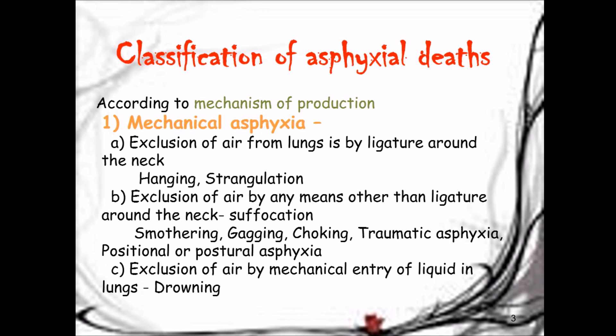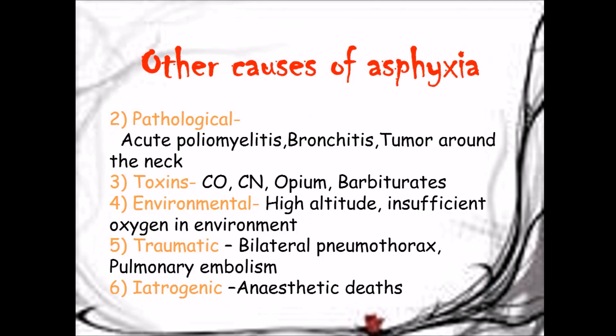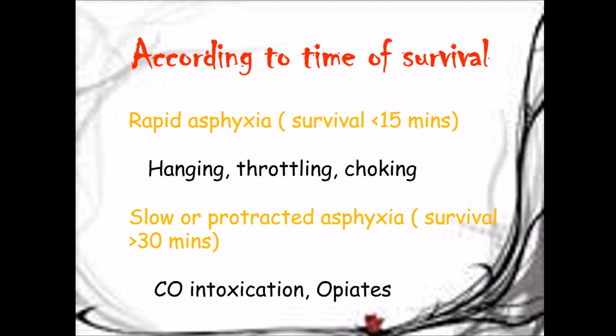Other forms include traumatic asphyxia or postural/positional asphyxia. Third is exclusion of air by mechanical entry of liquid into the lungs, as in drowning. Pathological asphyxia is seen in acute poliomyelitis, bronchitis, and tumors around the neck, as well as various toxins like carbon monoxide, cyanide, opium, and barbiturates. Environmental asphyxia occurs at high altitude with insufficient oxygen. Traumatic asphyxia examples include bilateral pneumothorax and pulmonary embolism. Iatrogenic asphyxia may occur in anesthetic deaths.